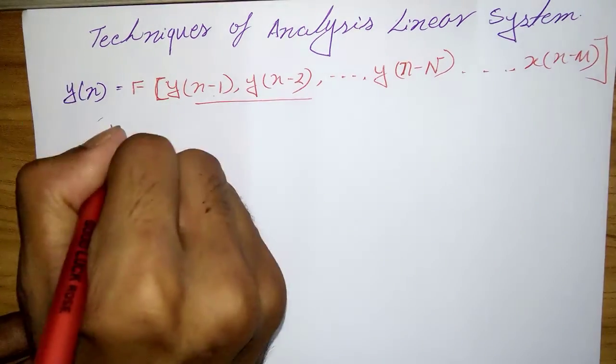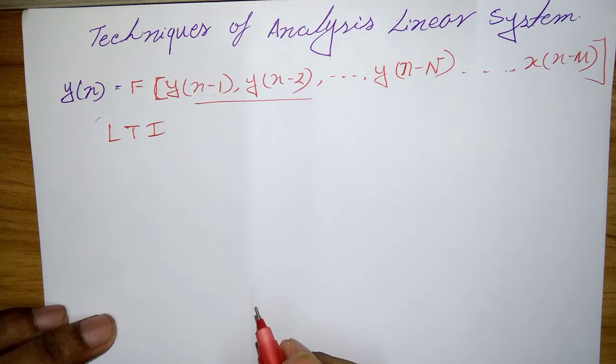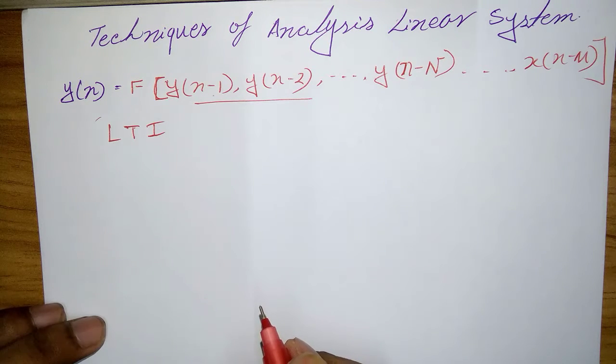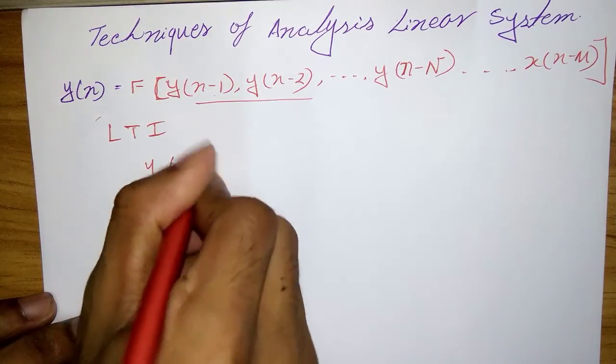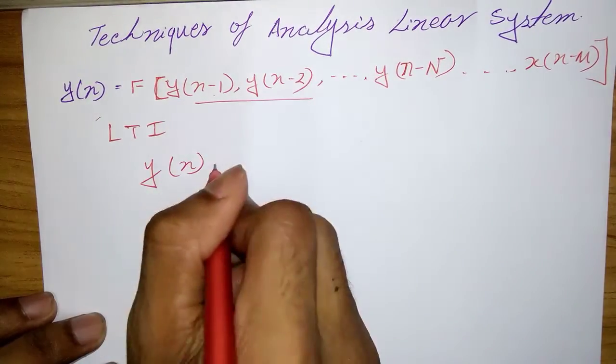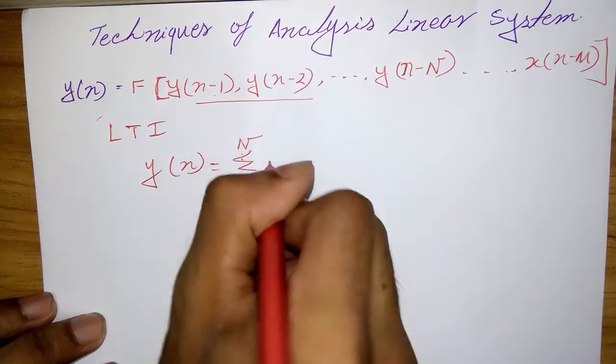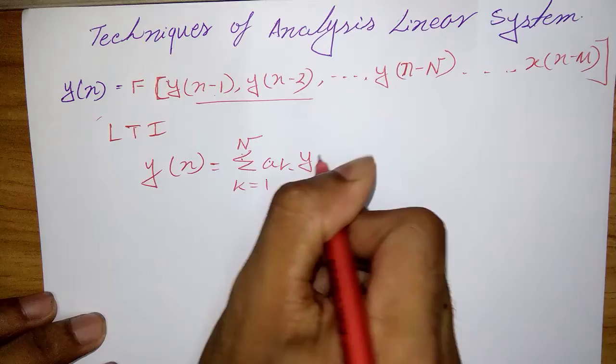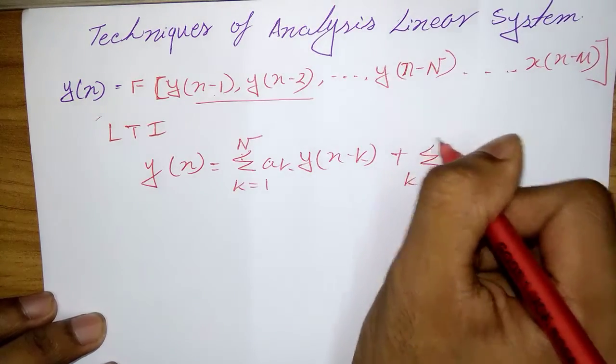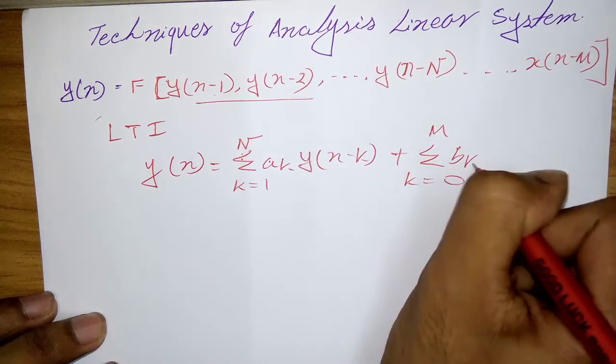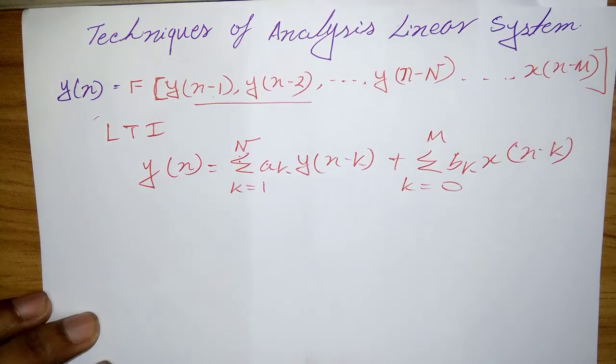For an LTI system, the general form of input and output relationship is y(n) equals sum from k=1 to N of a_k y(n-k) plus sum from k=0 to M of b_k x(n-k).